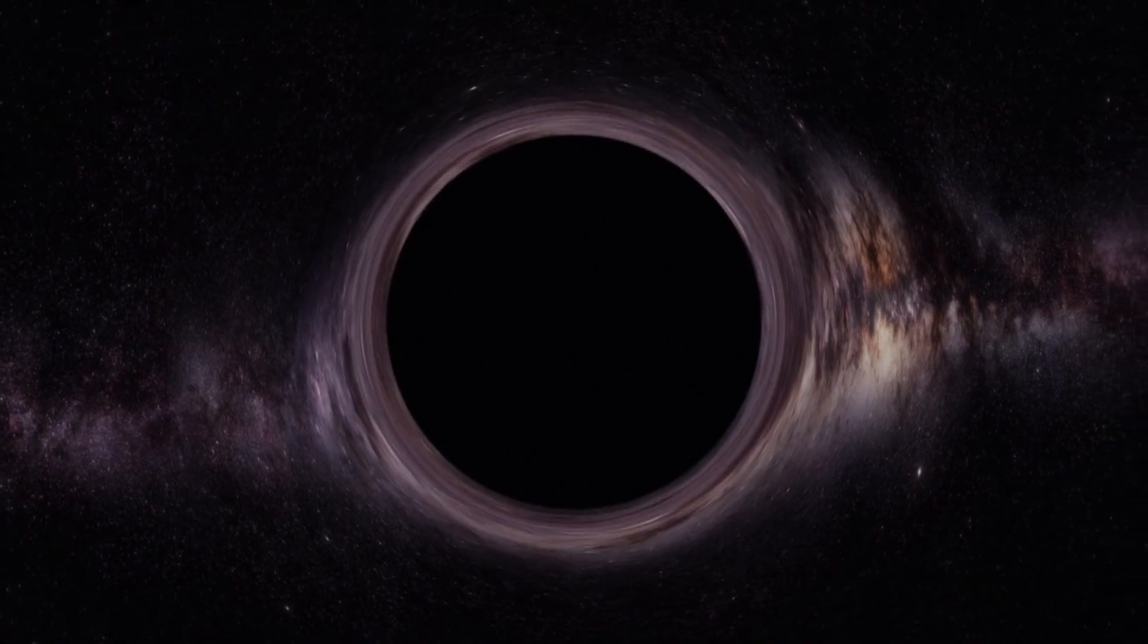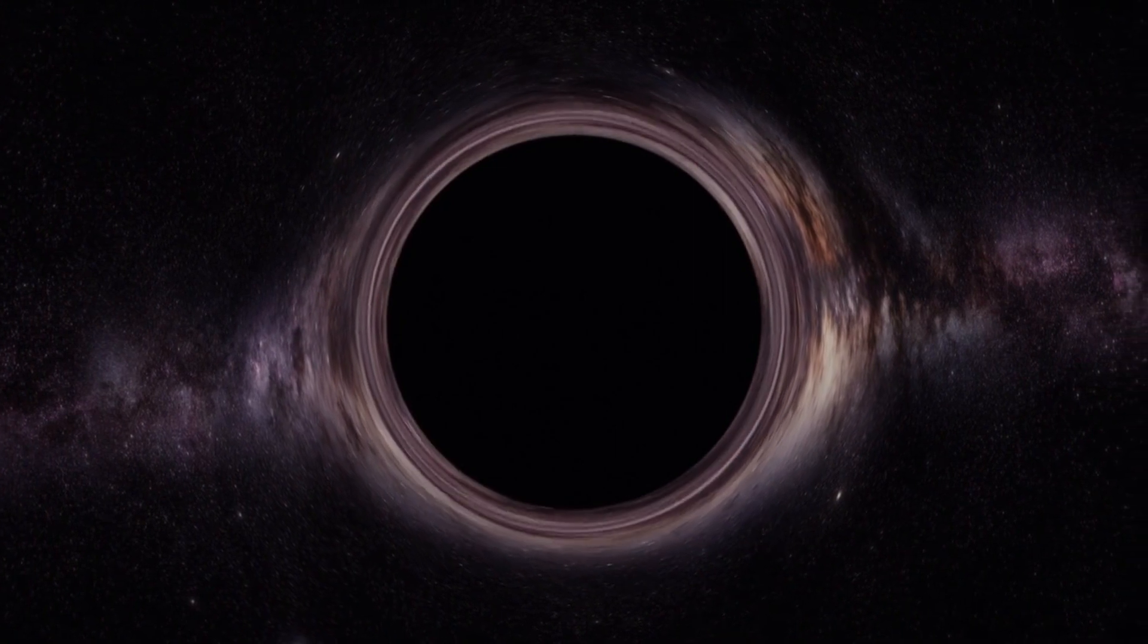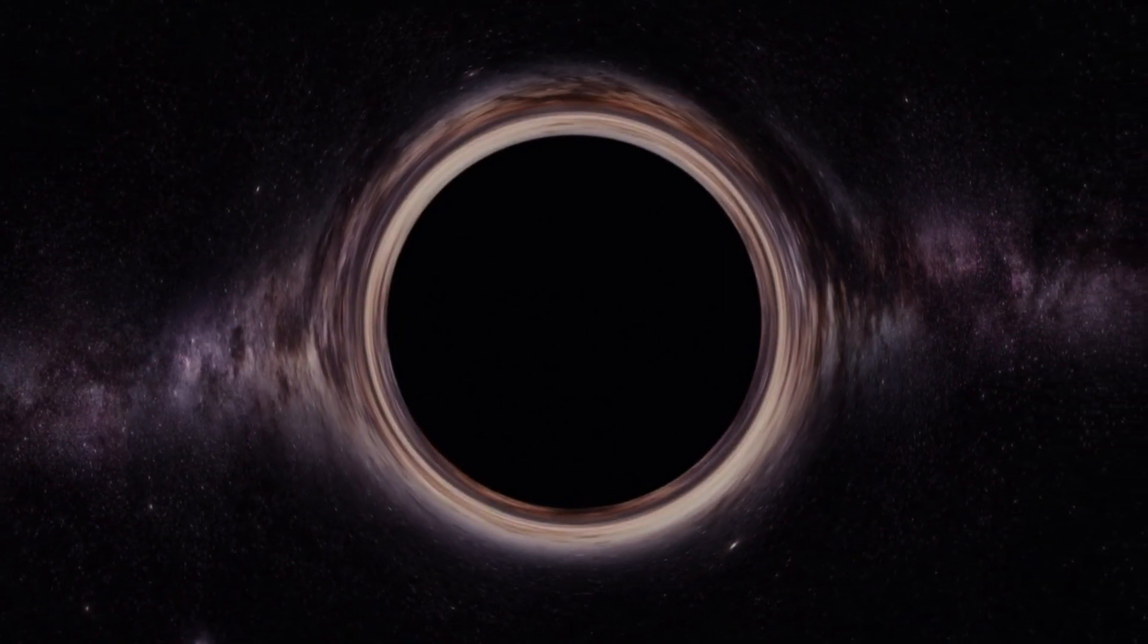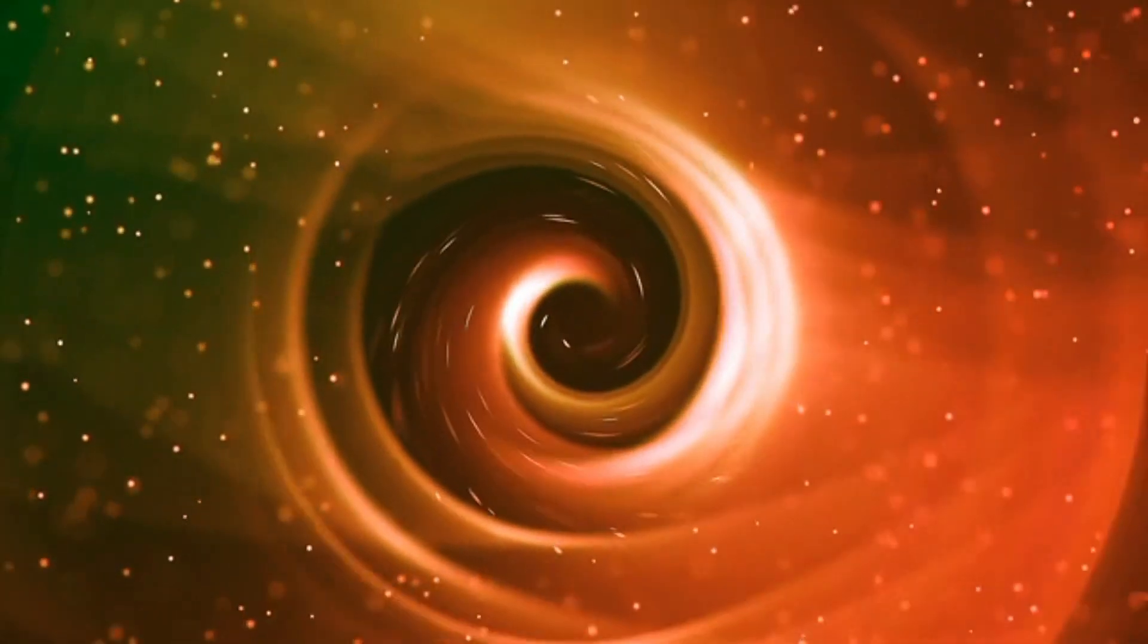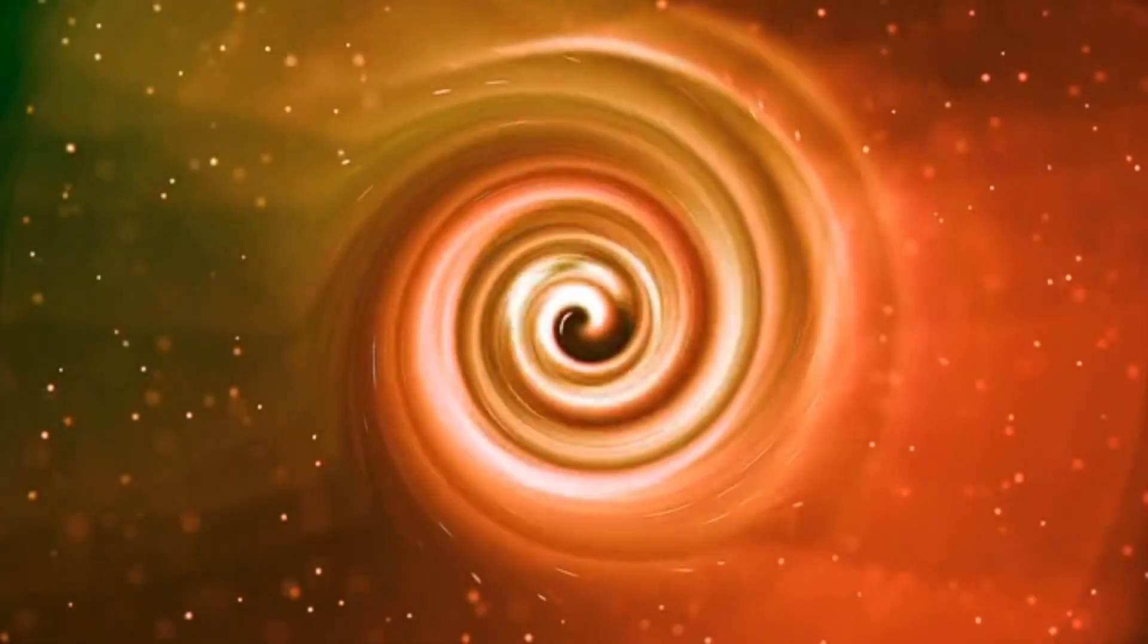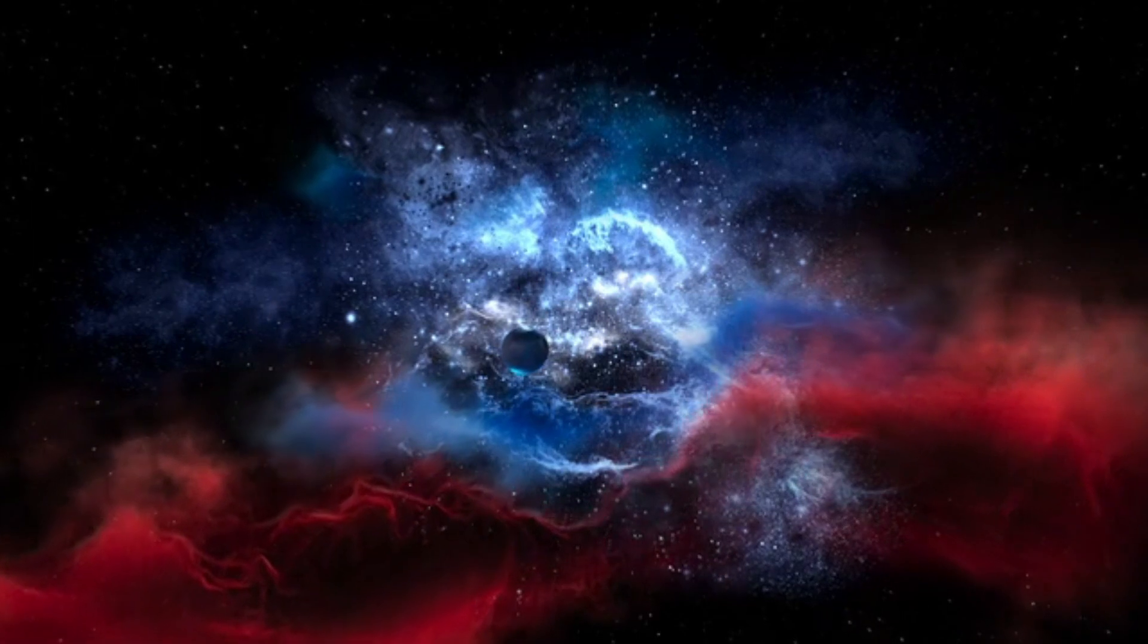Then the cores of the stars would merge to make a black hole, surrounded by a disk of the remaining material. A fraction of a second later, this material would flow into the black hole, and a jet of material moving at 99.99% of the speed of light would launch, representing the gamma-ray burst.